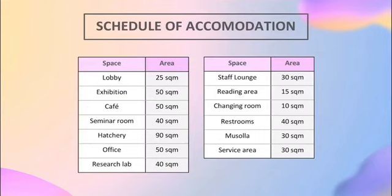The schedule of accommodation for this rehabilitation center consists of lobby, exhibition, cafe, seminar room, hatchery, office, research lab, staff lounge, reading area, changing rooms, restrooms, mussola, and service area where the total area of all of them accumulates to 550 square meters.